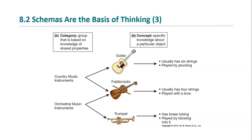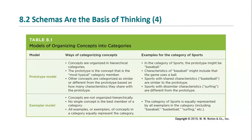Some items may actually be members of more than one category — for example, the fiddle/violin. In general, there are two models for organizing particular concepts into categories. The prototype model assumes a most typical prototype of that category and arranges other items hierarchically in terms of how similar they are to the prototype. In contrast, the exemplar model does not organize items into a hierarchy; they are simply all examples of that particular category of interest.